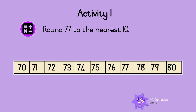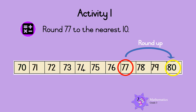What about this one? Round 77 to the nearest 10. Here is 77 on the number line. 77 can be rounded to 70 or 80. Which 10 is closer to 77? 70 or 80? 80 is closer to 77.